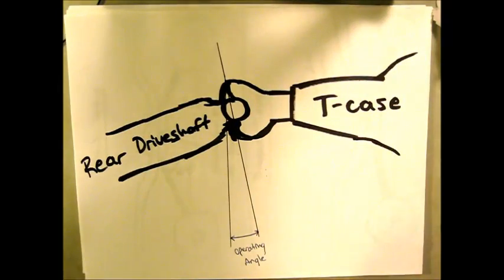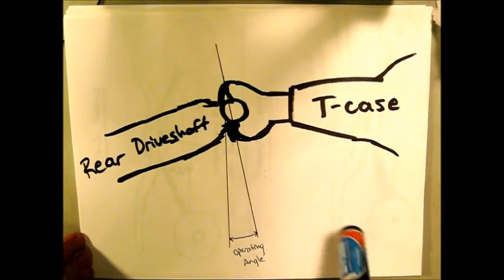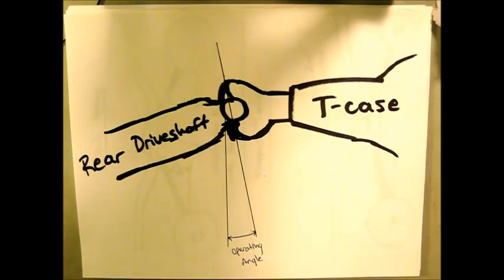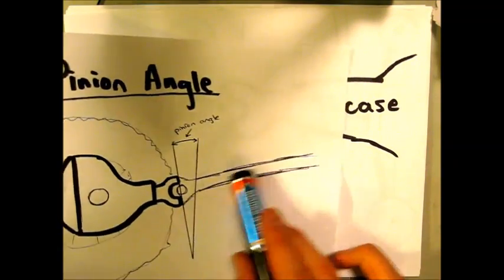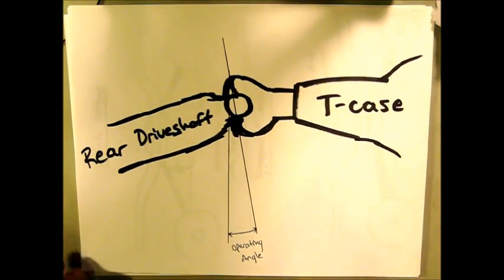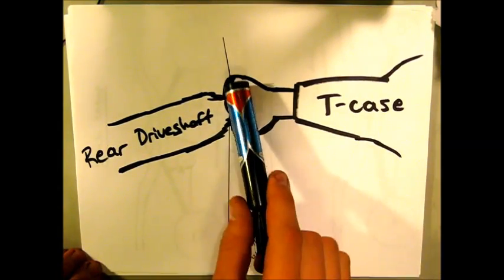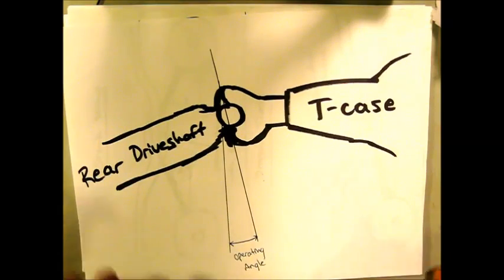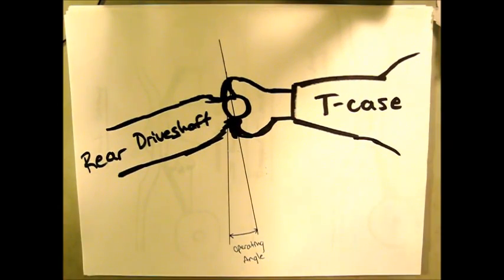And then you're also going to have the operating angle at the transfer case, which will be essentially where this driveshaft meets up with the transfer case. And the same thing there, if you pull the driveshaft off, measure at that yoke, that's going to give you the angle that it's coming off your T-case.